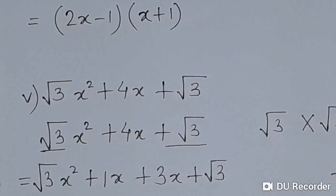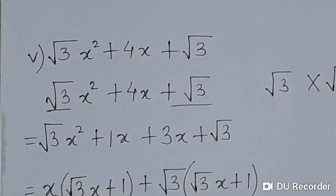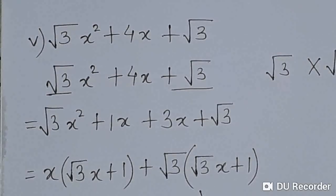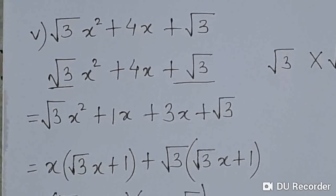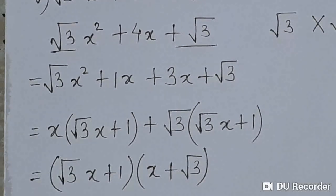So we rewrite the polynomial as √3x² + 1x + 3x + √3. From the first two terms, x is common: x(√3x + 1). From the last two terms, 3x + √3 — since 3 = √3 × √3, we take √3 as common: √3(√3x + 1). Now (√3x + 1) is common, so we take it out: (√3x + 1)(x + √3).